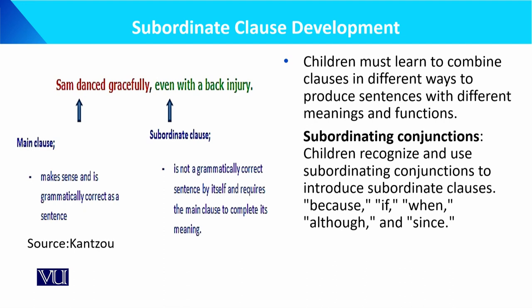Children recognize and use subordinating conjunctions to introduce subordinate clauses — 'because,' 'if,' 'when,' 'although,' and 'since.' For example: 'Sam danced gracefully even with a back injury.' The main clause is 'Sam danced gracefully' and the subordinate clause is 'even with a back injury.' The main clause is grammatically correct by itself and requires the subordinate clause to complete its full meaning.